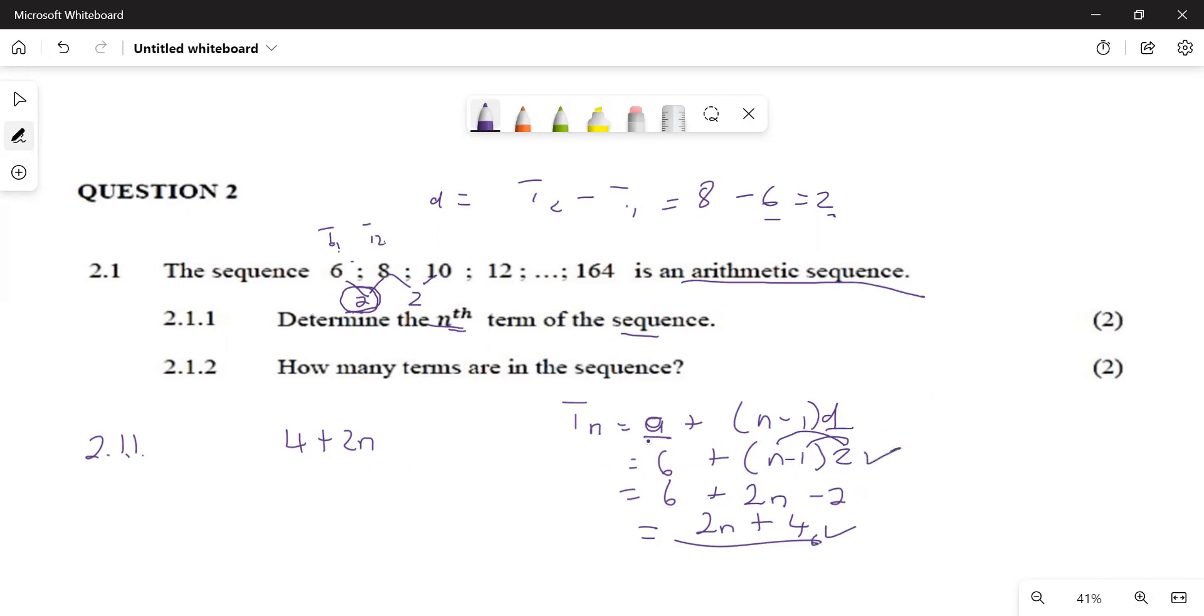We're going to get our 2 marks there. The next thing that they ask us is to say how many terms are there in the sequence? We have the last term. They gave us the last term. What is the last term here? 164. It means we know what this thing here is. TN is 164. So we'll come and say 164 is going to be equal to 2n plus 4.